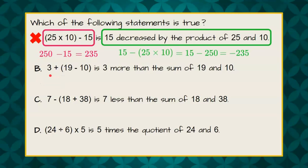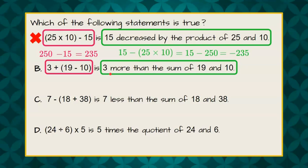Now let's look at B. Our numerical statement, 3 add the quantity 19 subtract 10, is 3 more than the sum of 19 and 10. So let's evaluate this. First, we're going to do our parentheses. 19 subtract 10 is 9. So 3 plus 9 is 12.